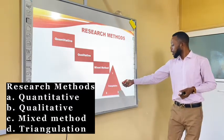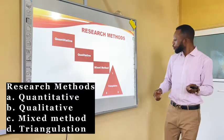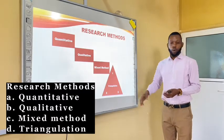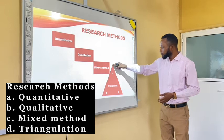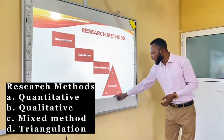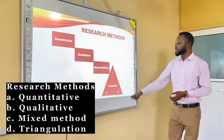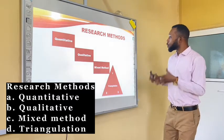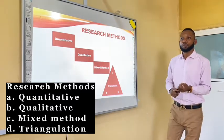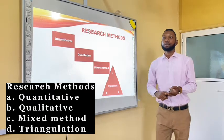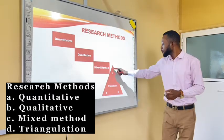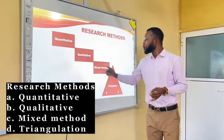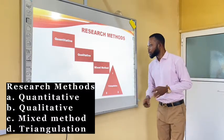The last one is triangulation, originating from the word triangle, which means when you are using three research methods, you are doing triangulation — method one, method two, and method three. So if you are doing a study using three methods, for example survey, FGD, and an indexing study, these three methods will lead to triangulation. So you can either use one method, or mixed method, or triangulation.